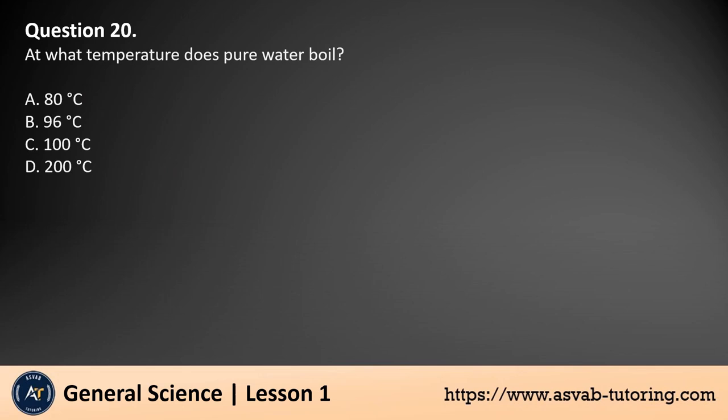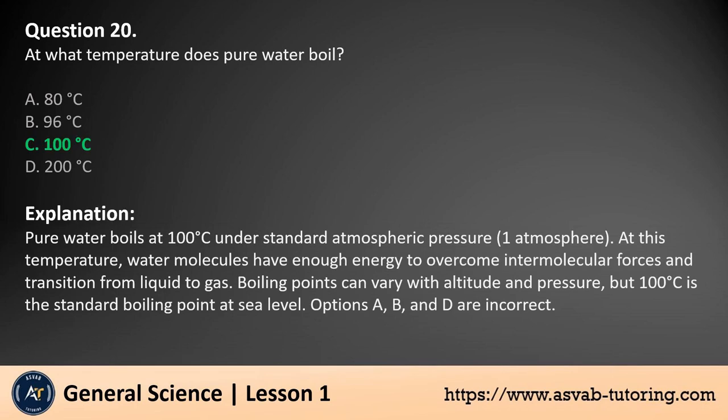Question 20. At what temperature does pure water boil? a. 80 degrees Celsius. b. 96 degrees Celsius. c. 100 degrees Celsius. d. 200 degrees Celsius. The answer is c. Pure water boils at 100 degrees Celsius under standard atmospheric pressure. At this temperature, water molecules have enough energy to overcome intermolecular forces and transition from liquid to gas. Boiling points can vary with altitude and pressure, but 100 degrees Celsius is the standard boiling point at sea level. Options A, B, and D are incorrect.